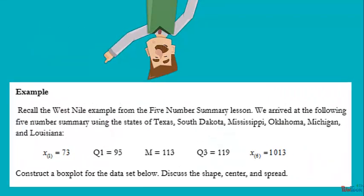Here's an example for us to look at. Recall the West Nile example from the five-number summary lesson. We arrived at the five-number summary using the states of Texas, South Dakota, Mississippi, Oklahoma, Michigan, and Louisiana. We're going to construct a box plot for the data set below and then discuss the shape, center, and spread.